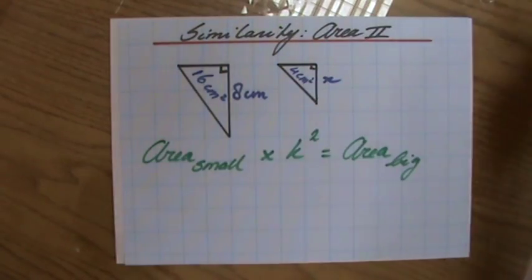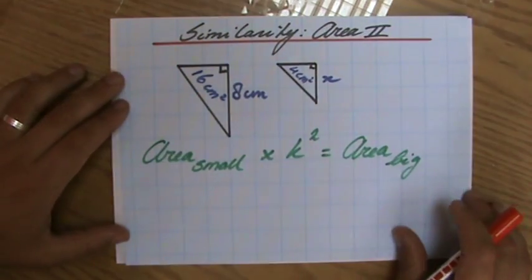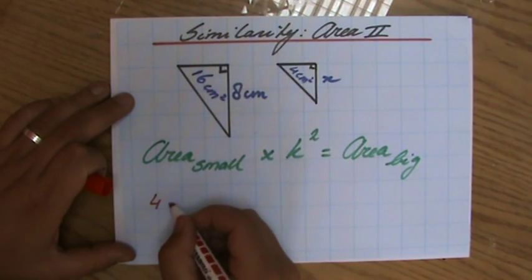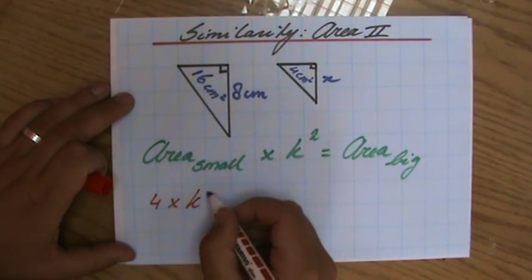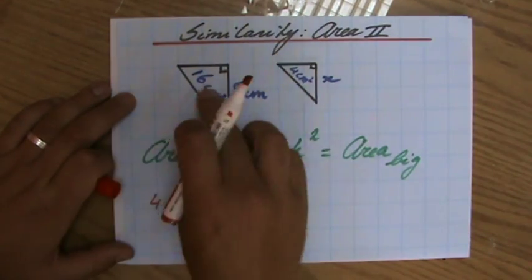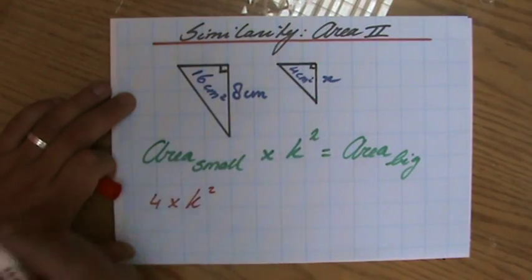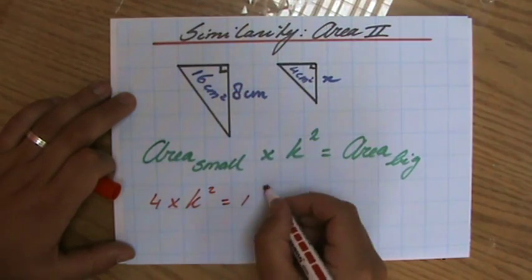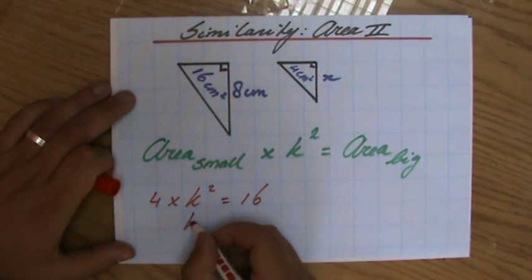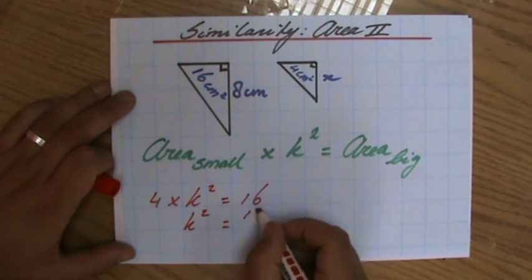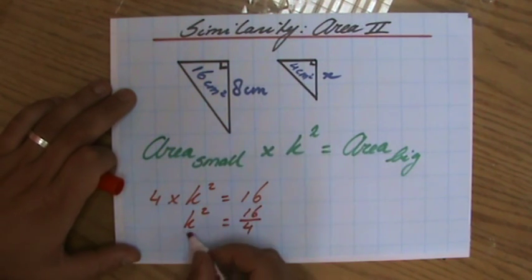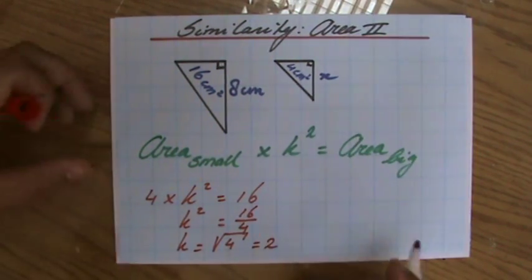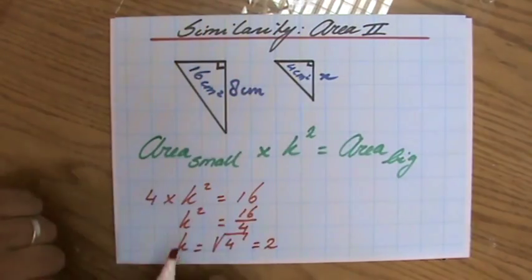By looking at some squares we understand that now. So the area of the small triangle which is 4 times the scale factor squared—and I don't know what the scale factor is, it's not 4—you don't divide the areas by the scale factor. No, 4 times scale factor squared is going to give me the area of the bigger one, which is 16. Now I can find out what that scale factor is: 16 divided by 4, so it is the square root of 4 which is 2. The scale factor is 2, it's not 4.